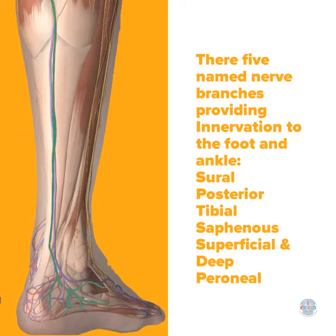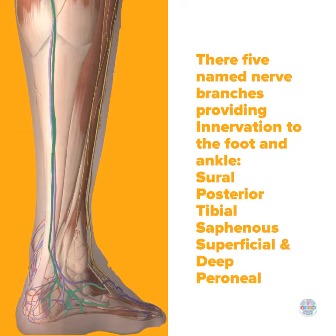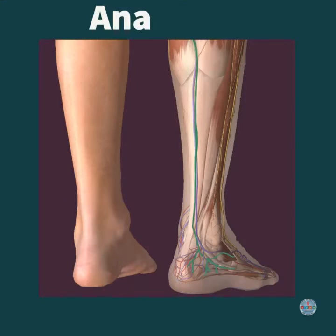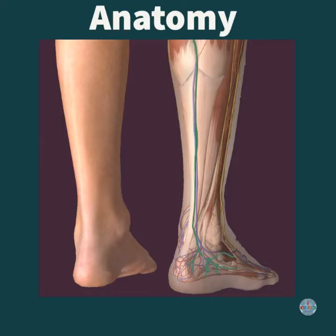Five nerves provide innervation to the foot and ankle. We will focus on the sural nerve. The sural nerve is located in the midline in the lower leg and travels behind the lateral malleolus to innervate the foot.